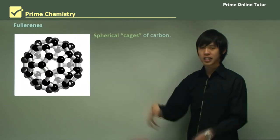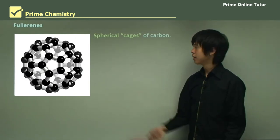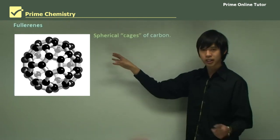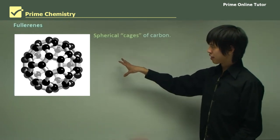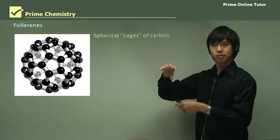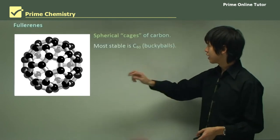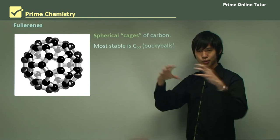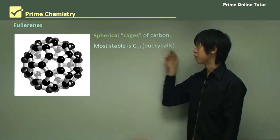So fullerenes. Fullerenes are the last type of allotrope of carbon. They're spherical cages of carbon, as you can see here, they're quite a cool looking structure. They're sort of like that soccer ball, old soccer ball shape, with the hexagons mixed with the pentagons. The most stable one is having 60 carbons within the cage. And they're called buckyballs.